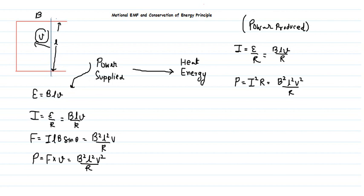As you can see, the power supplied equals the power produced, and both values are equal. This proves the conservation of energy principle — whatever energy we supply to the circuit is being converted into heat energy. The power supplied equals the power produced in the circuit.